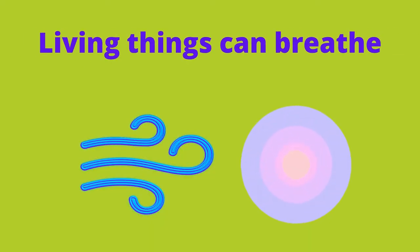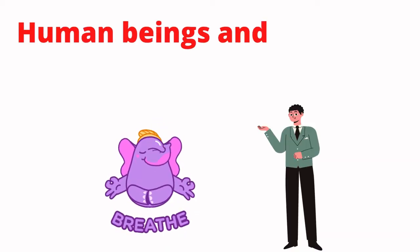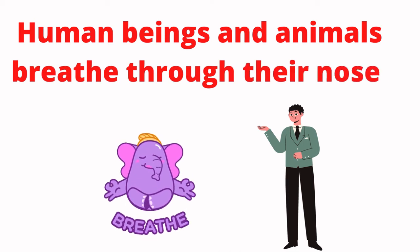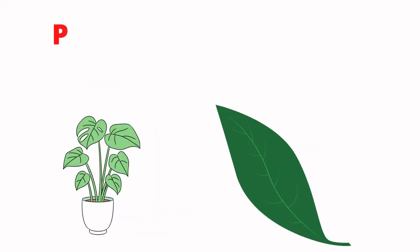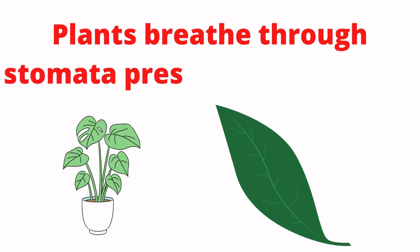Living things can breathe. Human beings and animals breathe through their nose. Plants breathe through stomata present on the leaves.